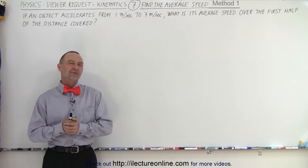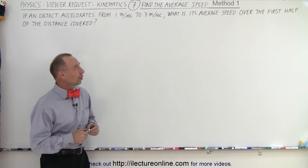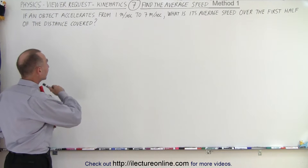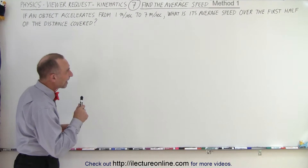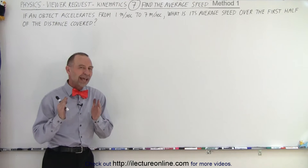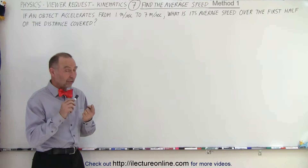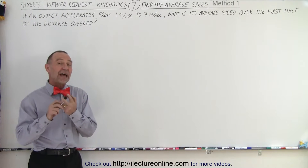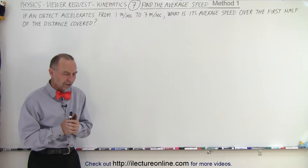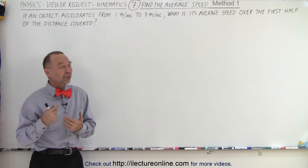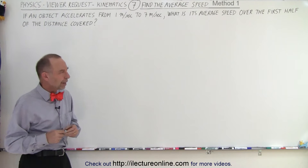Welcome to iLectureOnline. A few days ago, a viewer asked a very interesting question: if we have an object that accelerates from 1 meter per second to 7 meters per second, what is its average speed over the first half of the distance covered? The reason it's so interesting is they don't tell you the distance covered, they don't tell you how fast or how much time the object accelerates. So there seems to be not enough information given, which makes it a hard problem — how do you even begin?